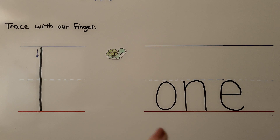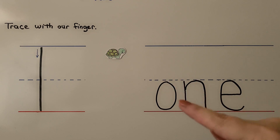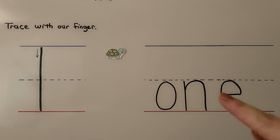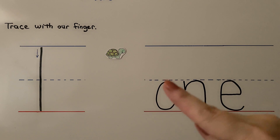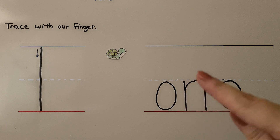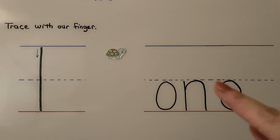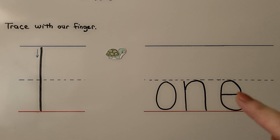Here we have the word one — O-N-E. For right-handed students: for the O, we start at the top and come around and back up again. For the N, we start here, come down, bounce back up and around and down to the line. For the E, we start in the middle between the dotted line and the bottom line, come across and around like that.